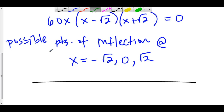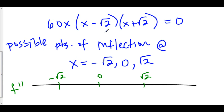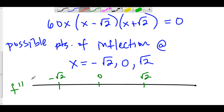We'll make a line analysis graph of f double prime and plot -√2, 0, and √2. Let's plug in a number to the left of -√2, like -10. This factor is negative, this factor is negative, and this factor is negative. Negative times negative times negative is still negative.